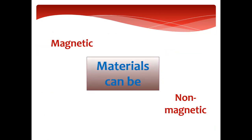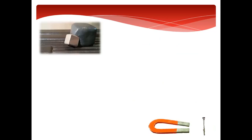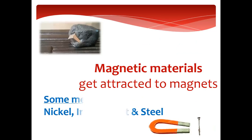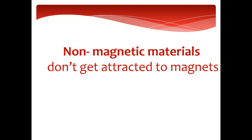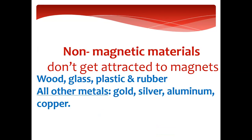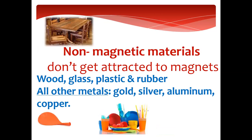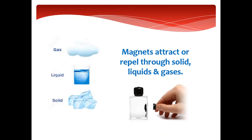Materials can be either magnetic or non-magnetic. Magnetic means the materials that are attracted and stuck to the magnets — like nickel, iron, cobalt, and steel. Non-magnetic materials are not attracted to the magnets — like wood, glass, plastic, and rubber. And all other metals besides the magnetic ones — such as gold, silver, aluminum, and copper — are also non-magnetic. Please return to the video to practice which ones are magnetic and non-magnetic.